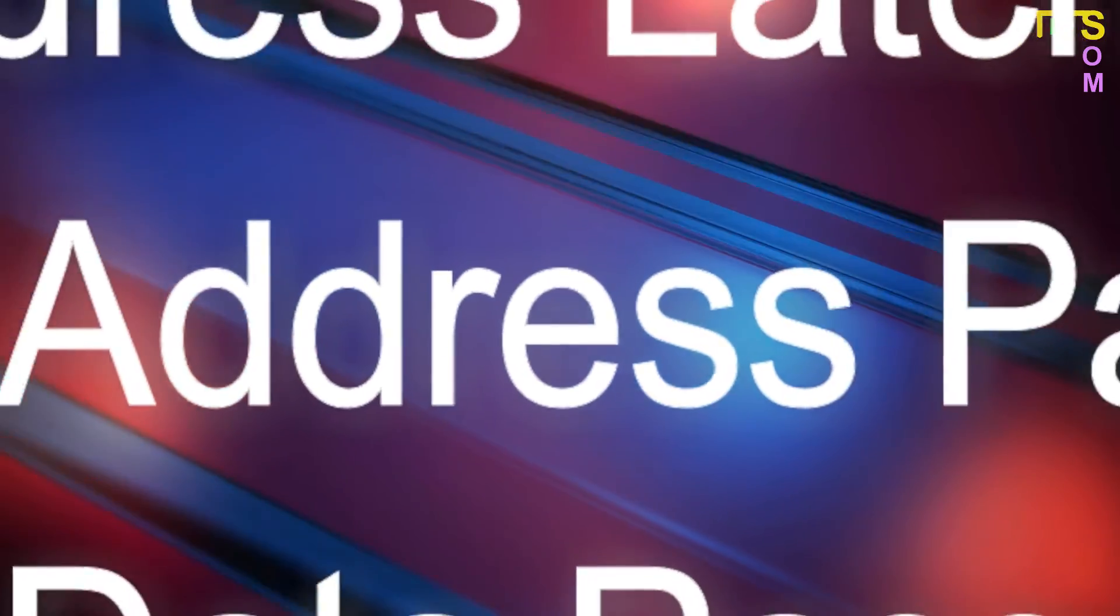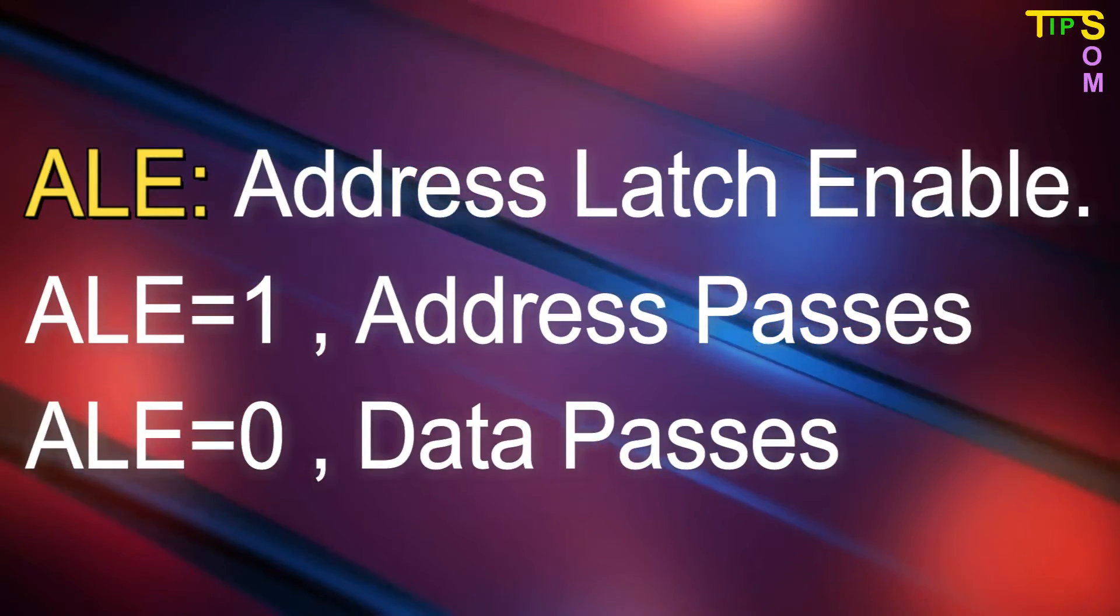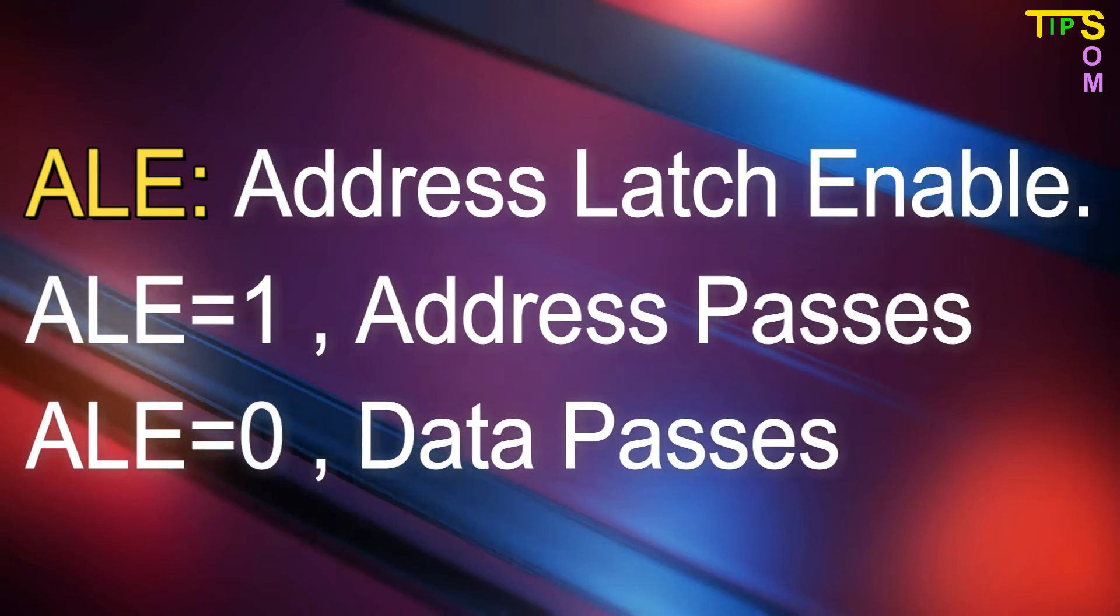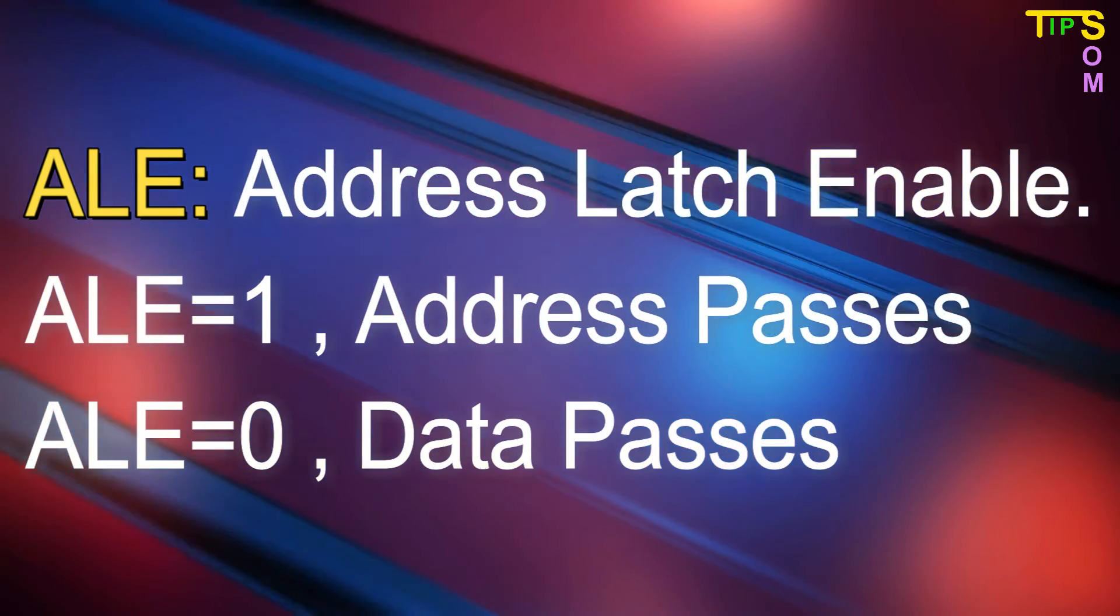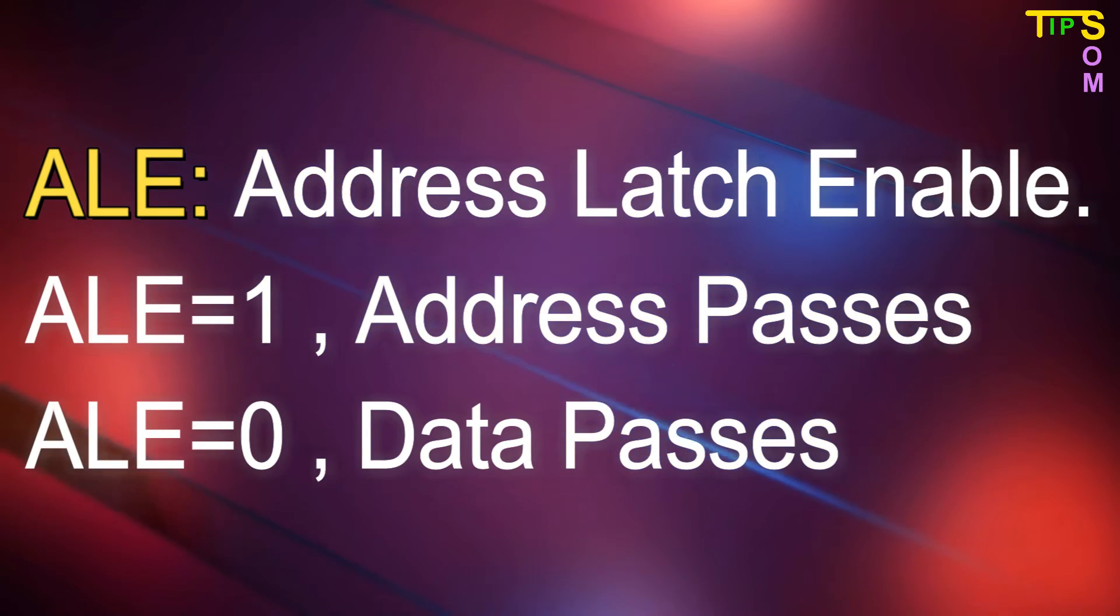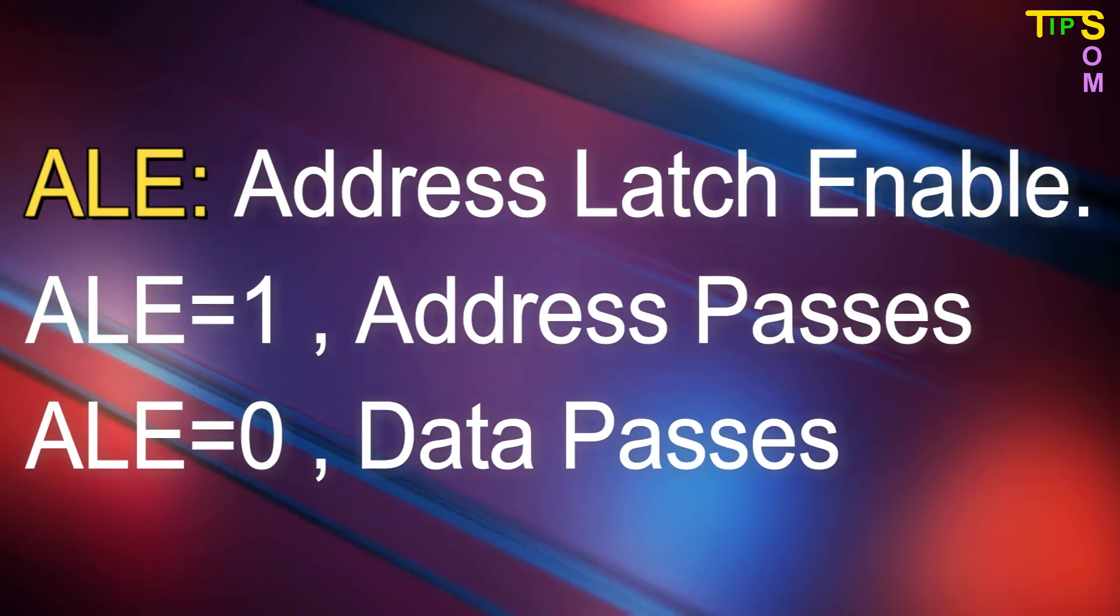Next one is the ALE or the Address Latch Enable. When it is set to 1, it defines the address will be passed through the common bus of the microprocessor. And when it is 0, it defines the data is passing through that common bus of AD0 to AD7.